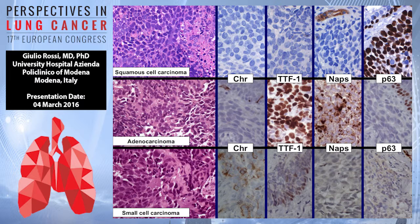Squamous cell lung cancer stains with p63 or p40 and is negative for the other markers. Adenocarcinoma is positive for TTF1 and Napsin and negative for chromogranin — the most specific neuroendocrine marker — and p63. The third case, small cell lung cancer, shows positivity for TTF1, synaptophysin, and chromogranin, but is negative for Napsin and p63.